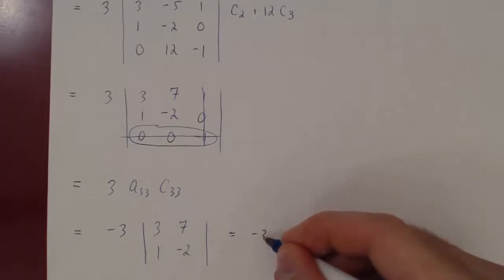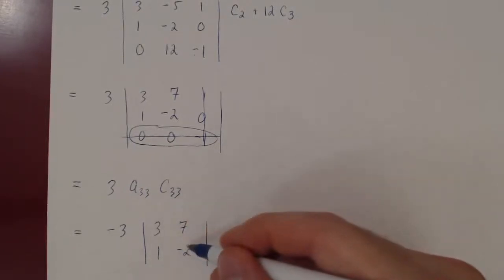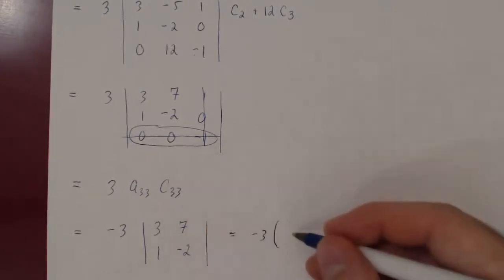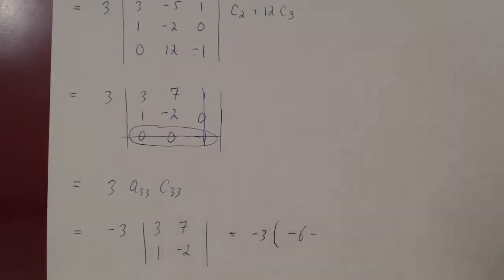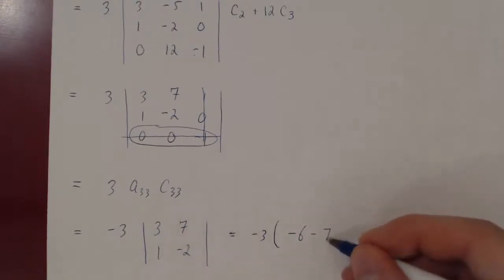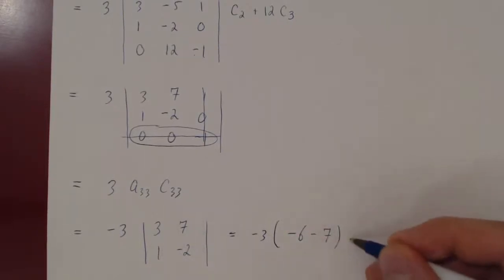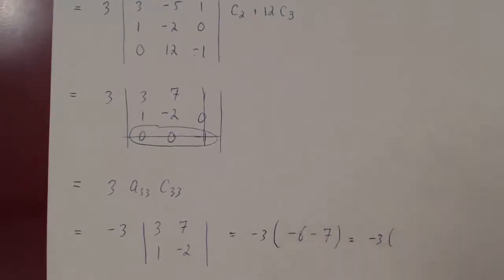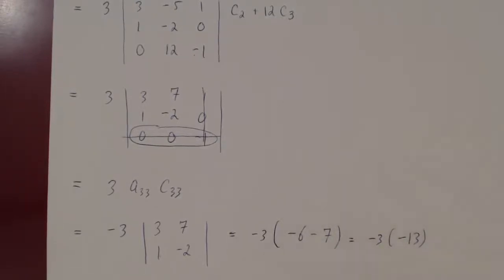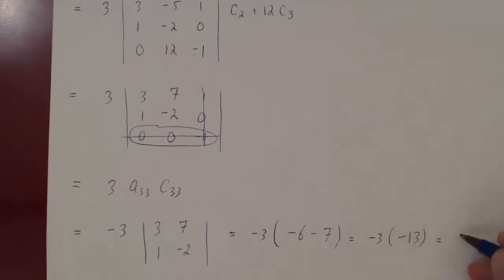So we have negative 3 times: AD is 3 times negative 2 equals negative 6, minus BC which is 1 times 7 equals negative 7. So we have negative 3 times (negative 6 minus negative 7) equals negative 3 times negative 13, giving us positive 39.